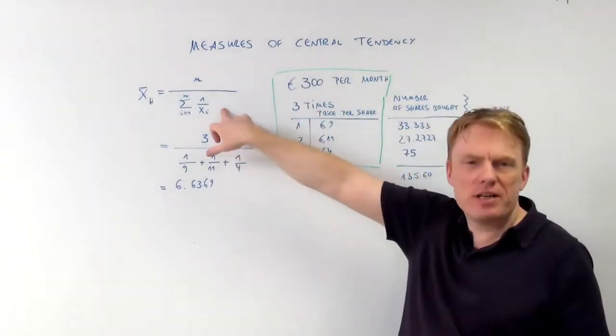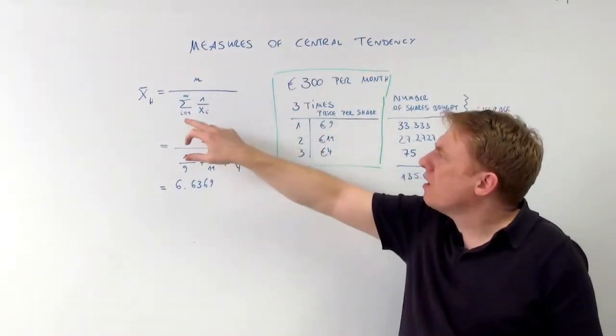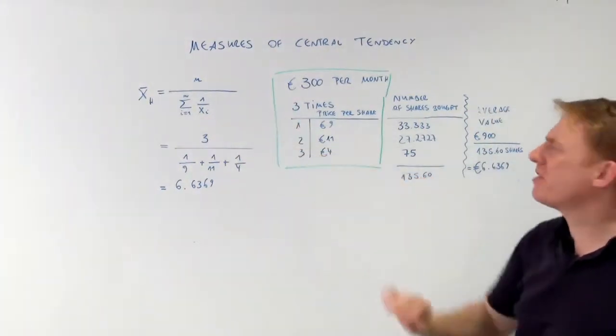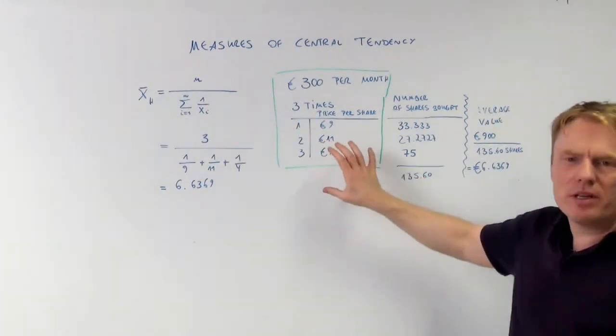The harmonic mean is defined as n divided by a special sum. Let's take a look at an example.